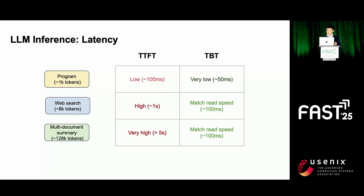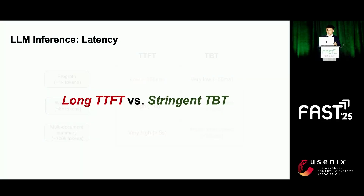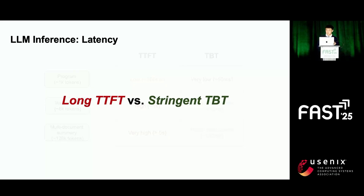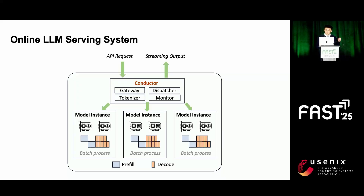The decoding stage, on the other hand, is more bandwidth intensive and has lower computational resource utilization, but its latency must meet at least the user's reading speed — for example, 10 tokens per second. Therefore, LLM inference faces huge challenges. The long context prefill consumes a substantial amount of GPU compute time, and the stringent TBT limits the computational efficiency of requests in a prefill-decode mixed batch. When we apply the inference process across multiple instances and introduce a central scheduler called Conductor, we get an online LLM serving system. The system provides a streaming API, and as a service quality guarantee, the TTFT and TBT latency should not exceed predefined thresholds.